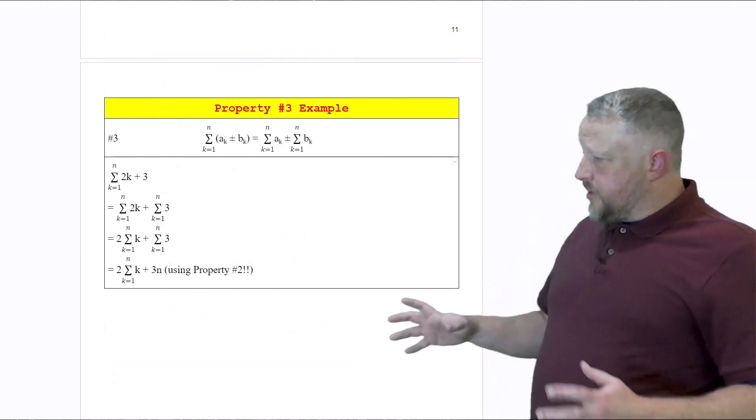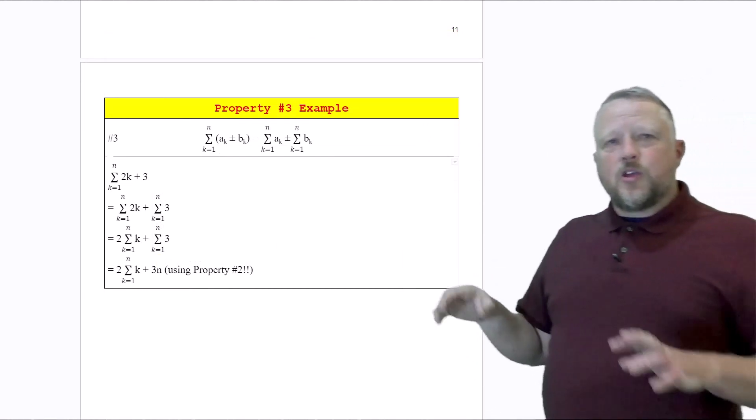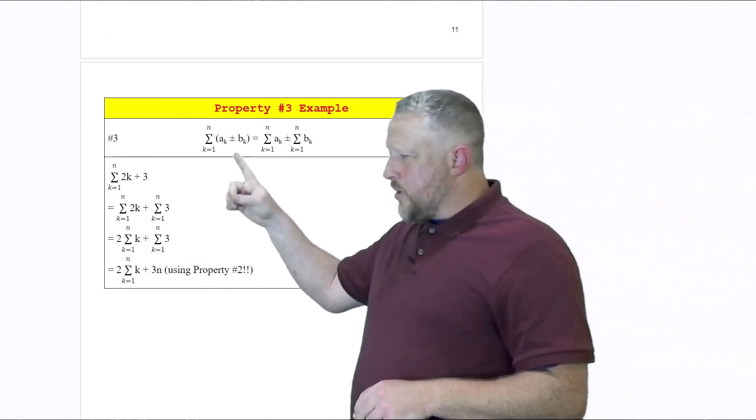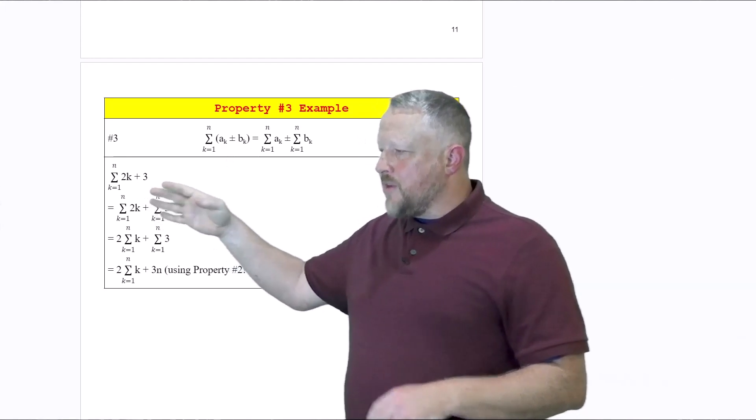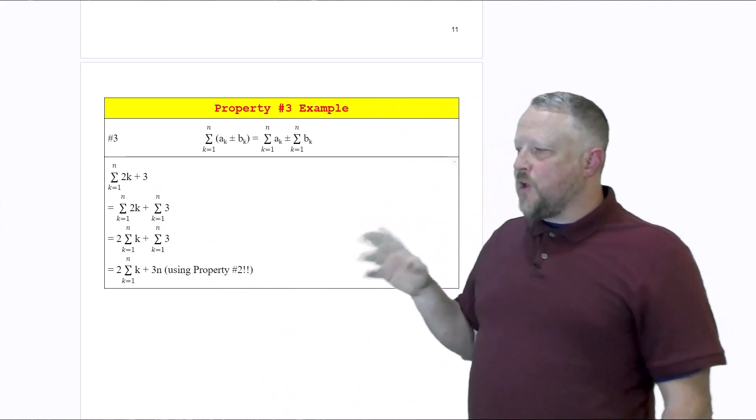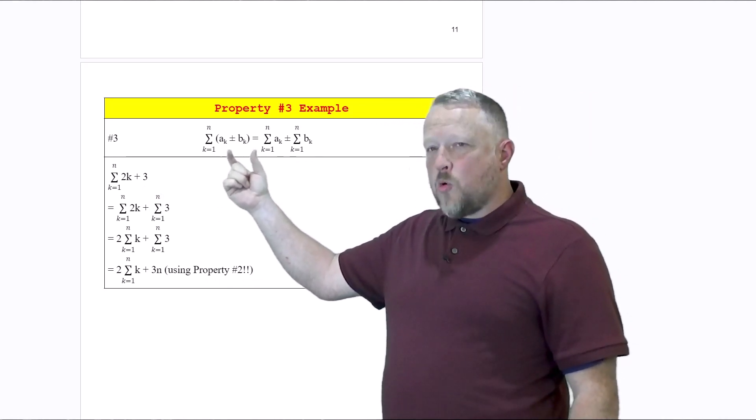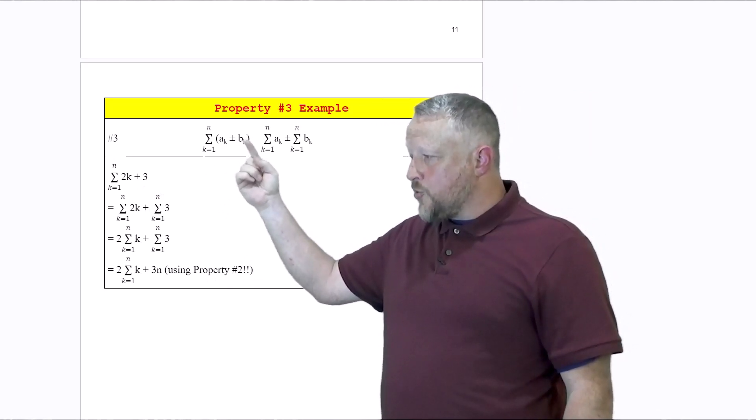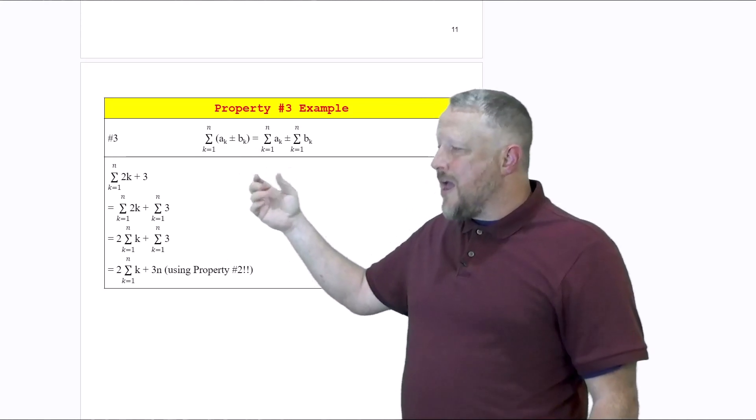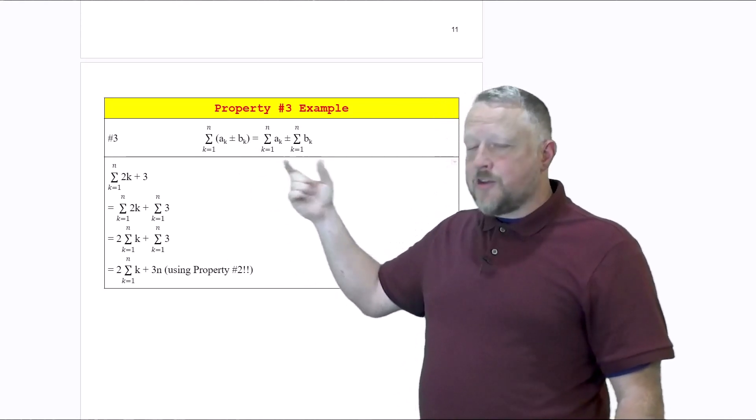Here's an example using property number three. In property number three, I'm given this equation where we have 2K plus three. If I'm given a certain equation that's combined using a plus or a minus, I can break them down into smaller sigmas and solve them maybe just a little bit faster.